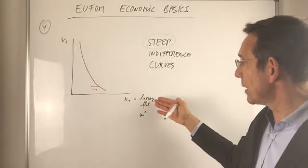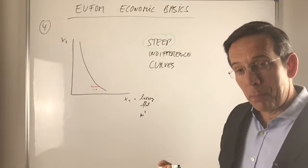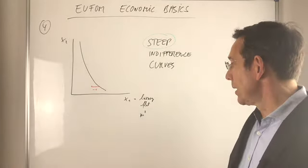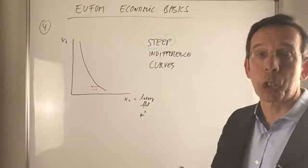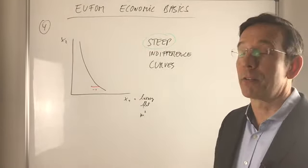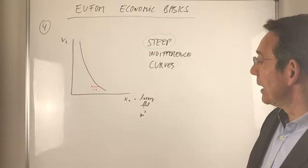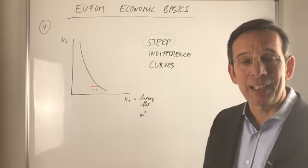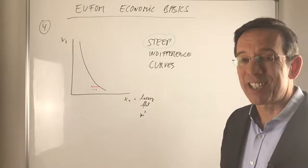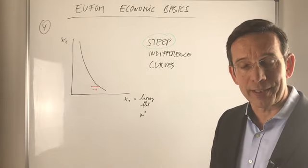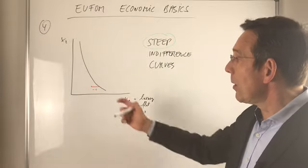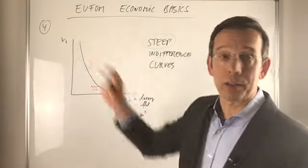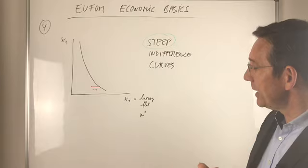Take a luxury flat measured in square meters. The more x1 you have, the more square meters of a luxury flat you have. A steep indifference curve reflects your preference for a luxury flat in comparison to all other goods. That's the idea.